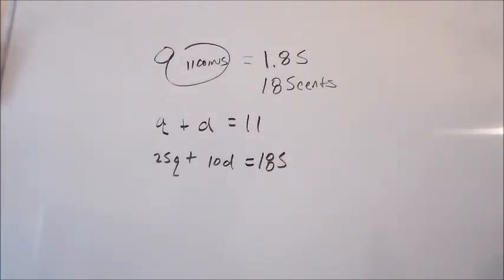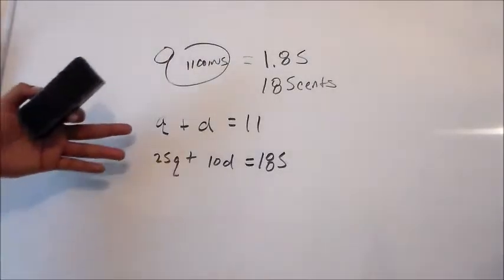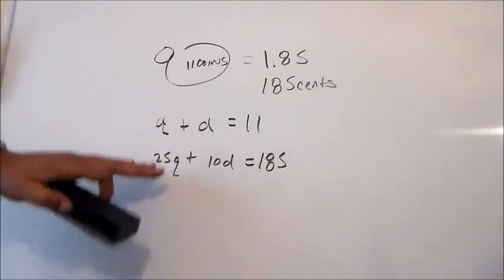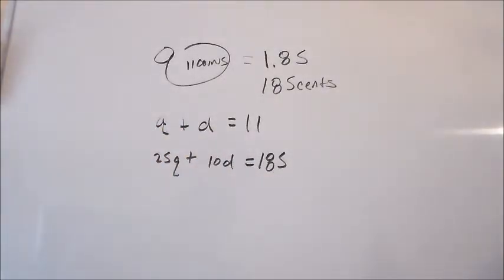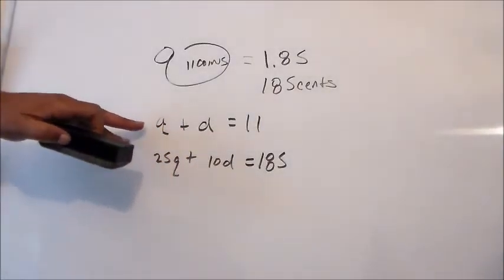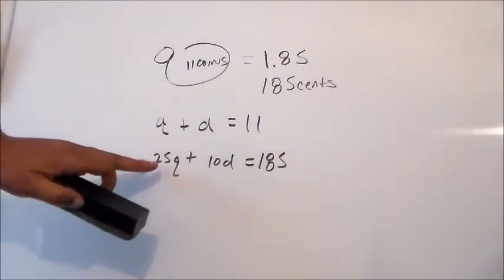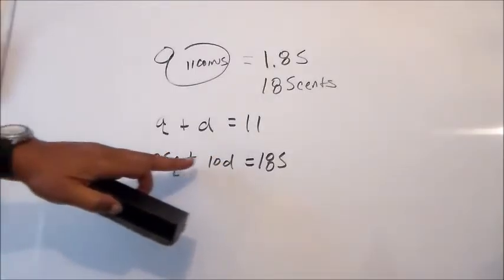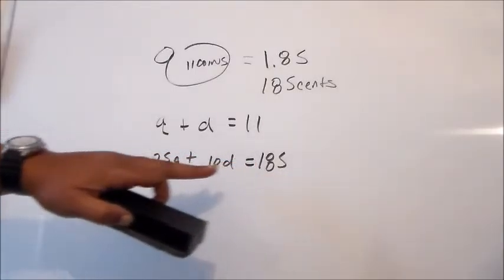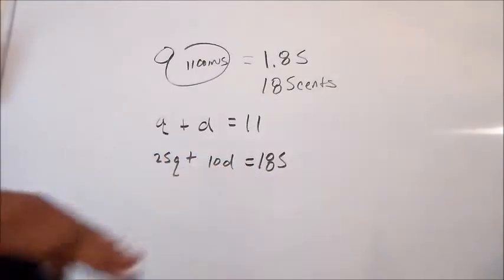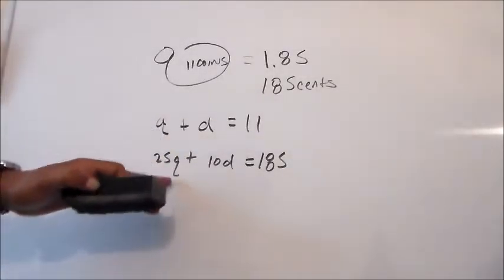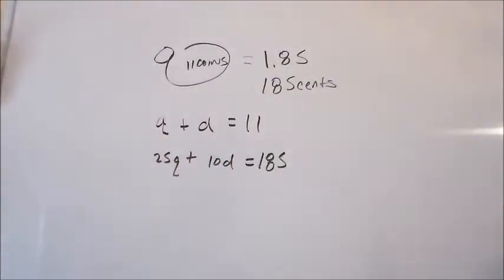Now when we solve a system of equations, basically what we're doing is we're trying to find out a solution for two equations. This is one equation, this is one equation. A variable plus another variable equals 11 and another setup or equation, linear equation equals 185. So we're going to solve for q and d which are two different variables. The cool thing I like is the way you can manipulate the systems of equations.